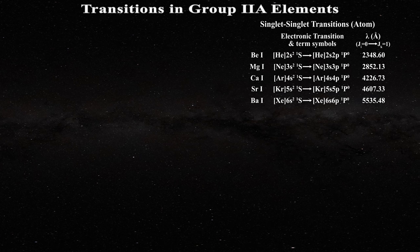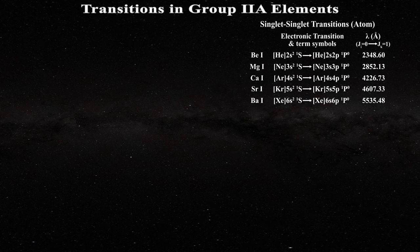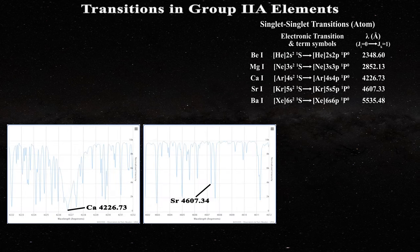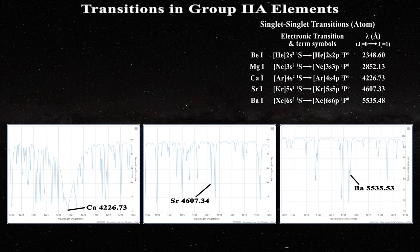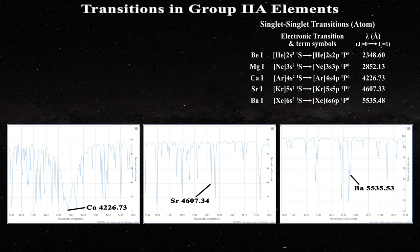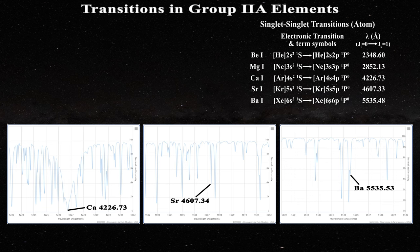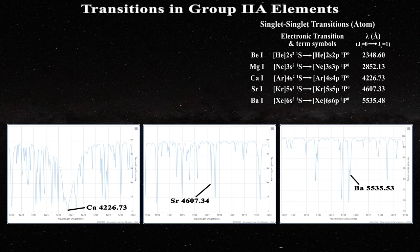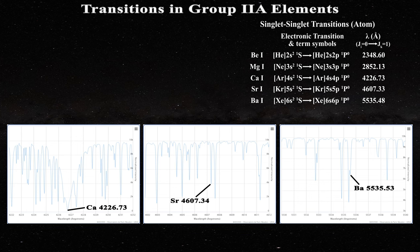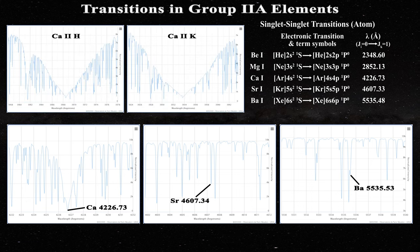Unfortunately, the singlet to singlet transition for beryllium and magnesium occur in the ultraviolet. Those spectra were not readily available for analysis. However, the spectra for the singlet to singlet transitions for calcium, strontium and barium are available as they occur in the optical range. The three relevant transitions as taken from the Paris Observatory digital database can be compared. Note the broadness of the calcium transition, whereas both the strontium and barium lines are relatively sharp. Yet despite the broadness of the calcium 1 line, the H and K lines of calcium 2 were much broader.